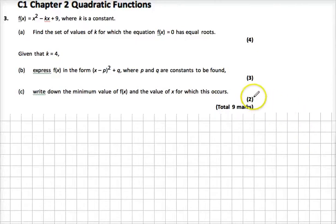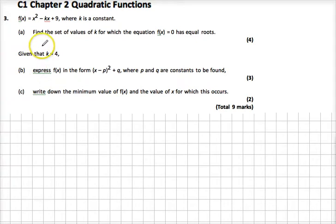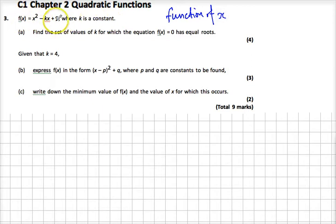Hello. Question 3 from our quadratics topic assessment. We've got, well for some reason it's picked up a little spelling correction from Word as well — just ignore that. So we've got a function, f of x. It means function of x. So function of x is this where k is a constant, meaning k is a number.